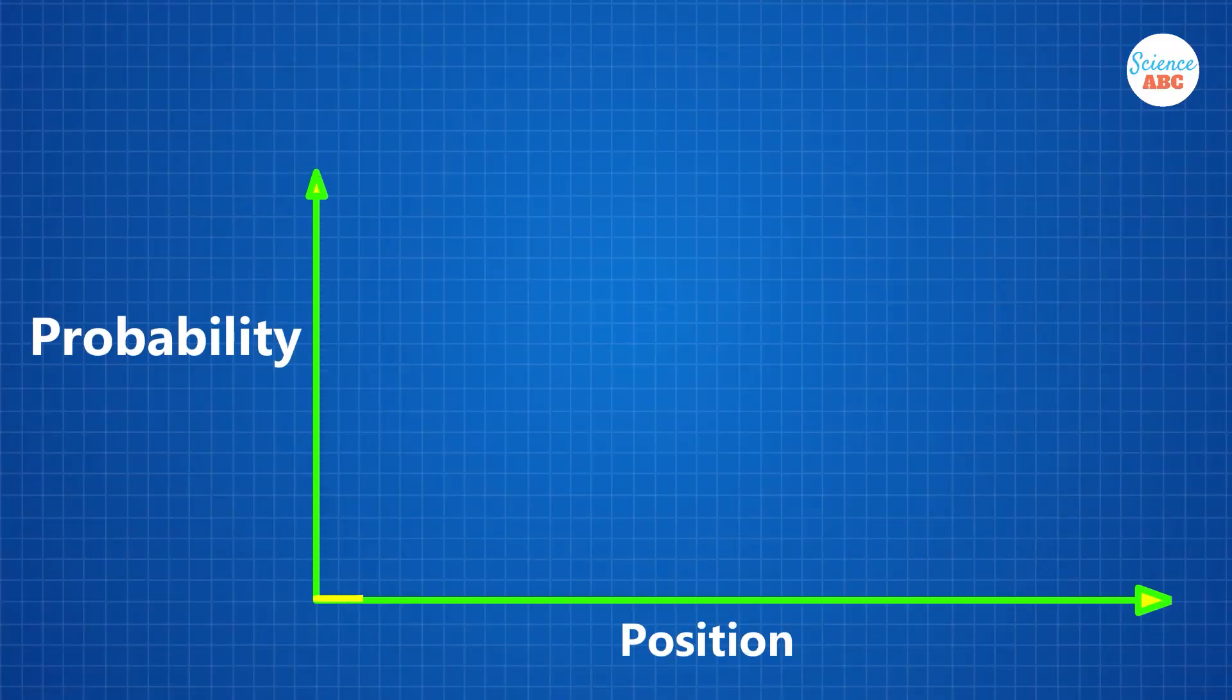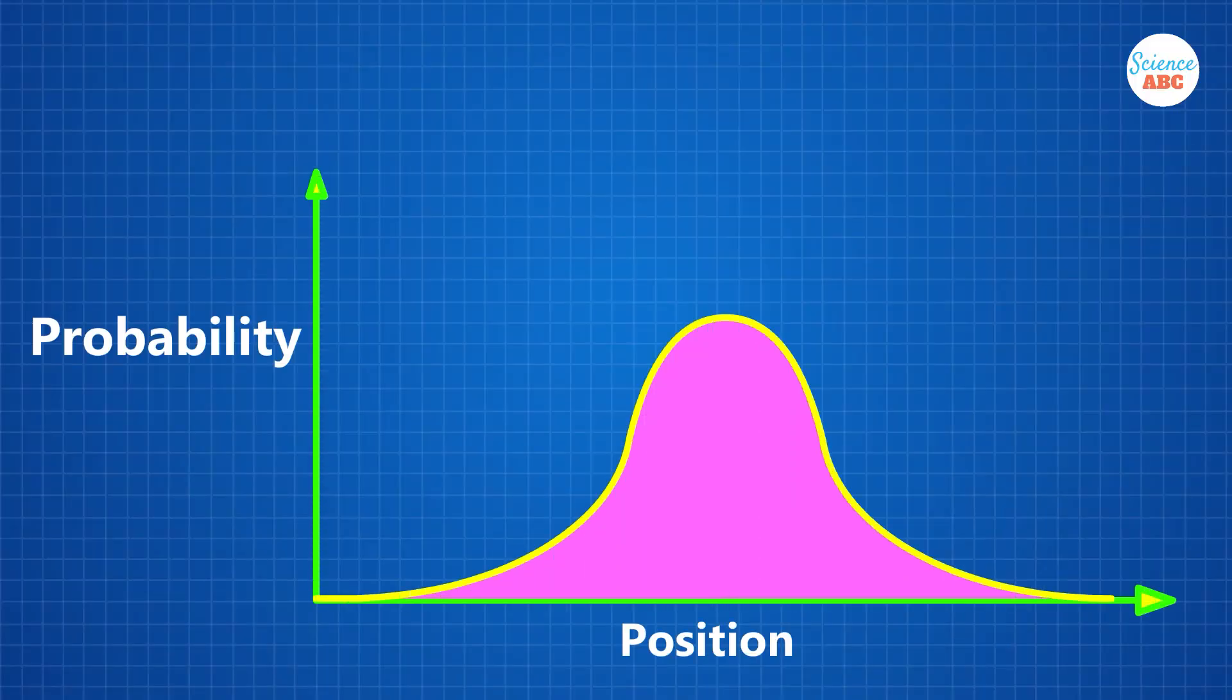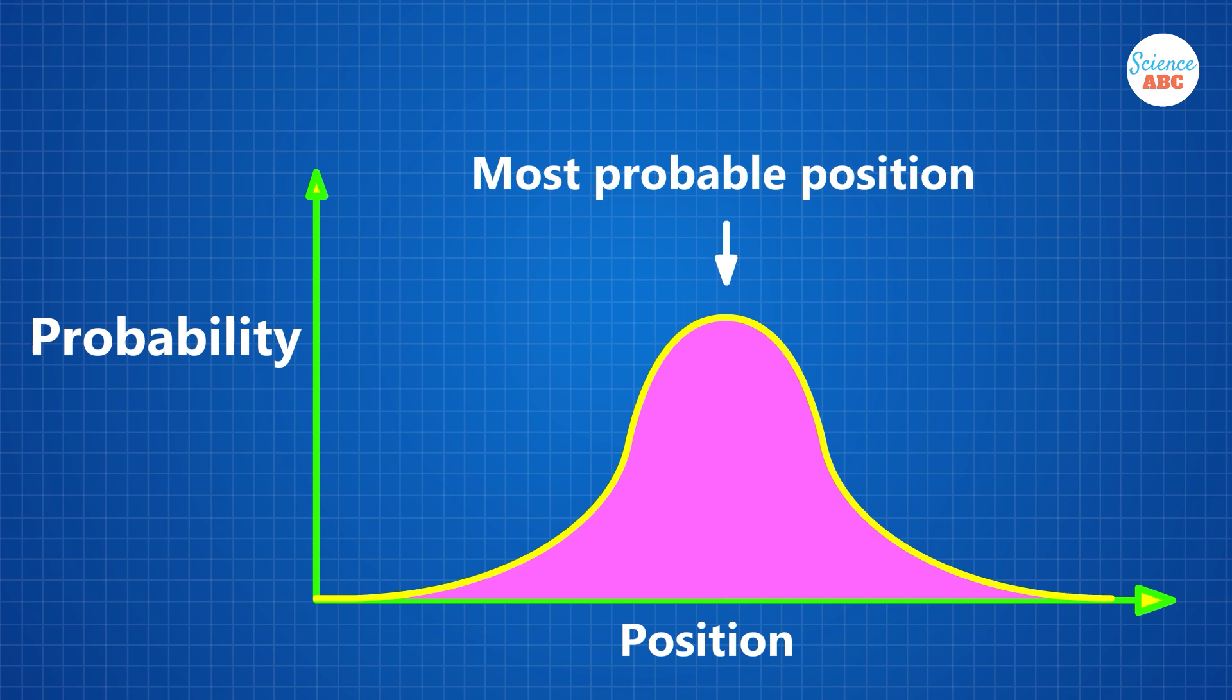This wave indicates the point where the electron is most likely to be found, the crest, and least likely to be found, the trough.